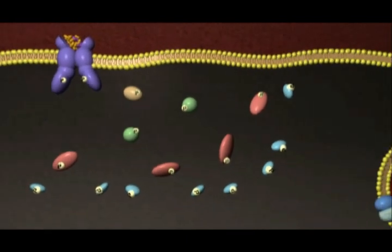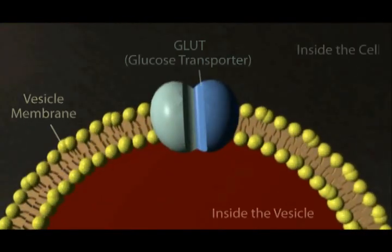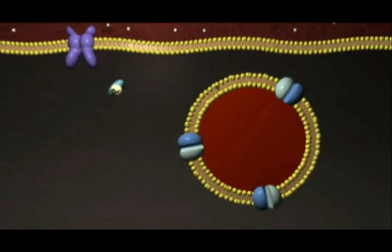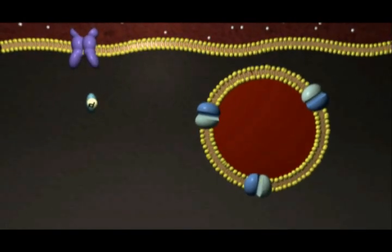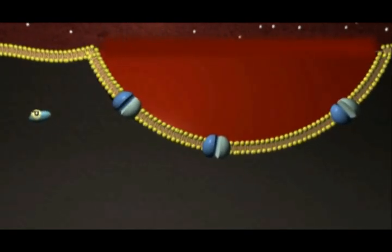One important consequence of this signal cascade is the movement of glucose transport proteins, called glutes, towards the cell surface. As these storage vesicles fuse with the cell membrane, the number of glutes present on the surface of the cells increase, allowing the glucose to enter the cell.